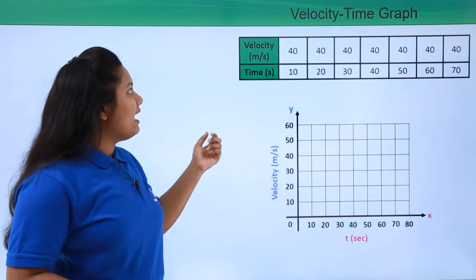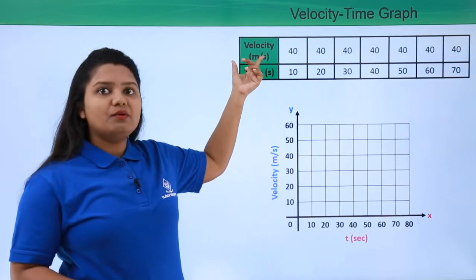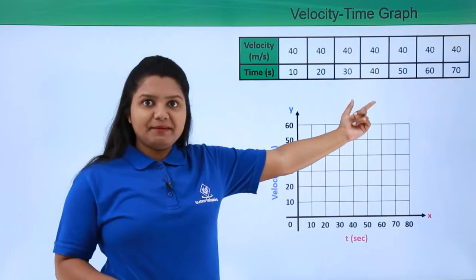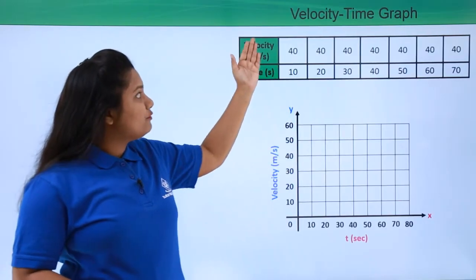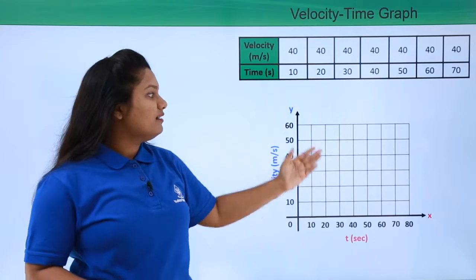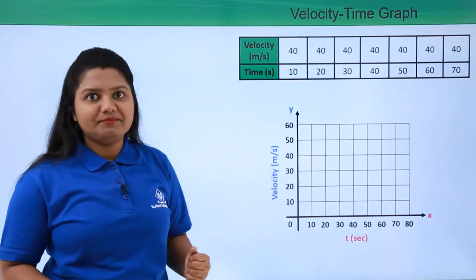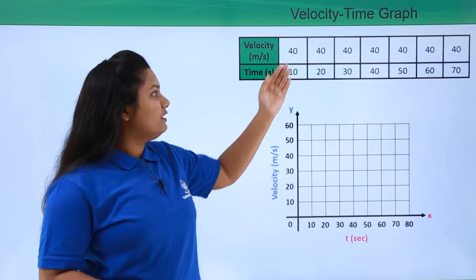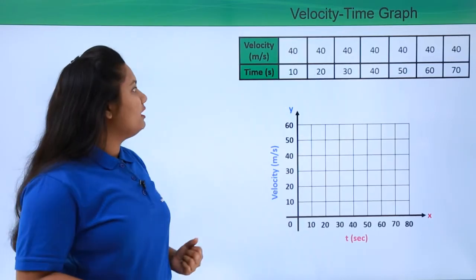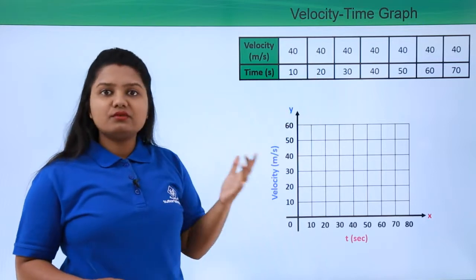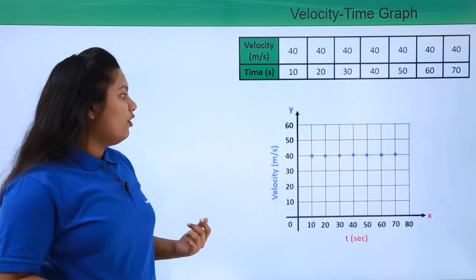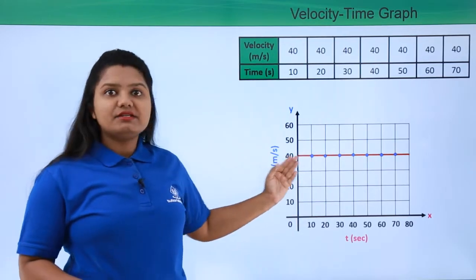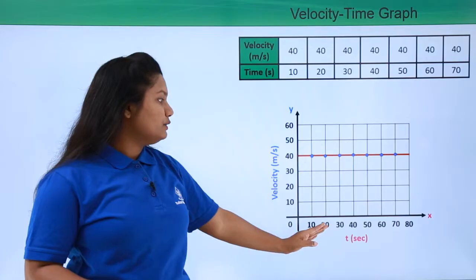Now let's say we have information about the velocity of a moving body at some instant of time, and we will plot all this data in the cartesian plane. Our first coordinate point will be (10, 40), the second will be (20, 40), and so on. On plotting all these points and joining them, we get a straight line which is parallel to the x-axis.